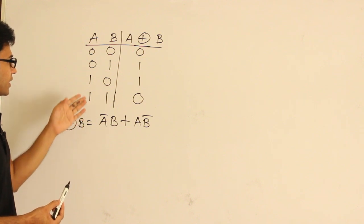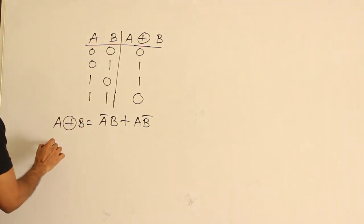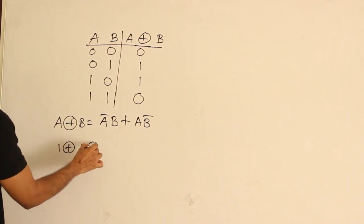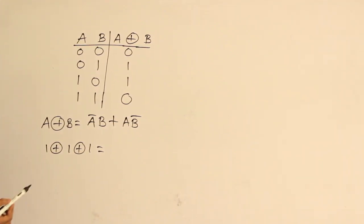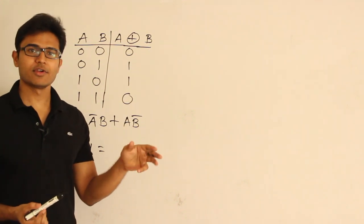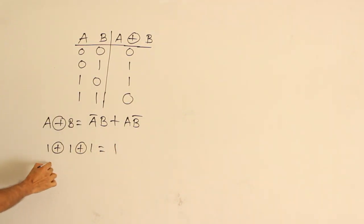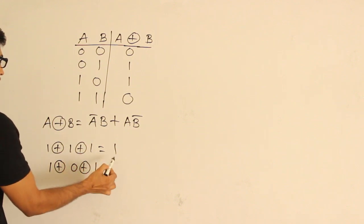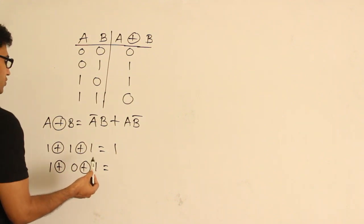It can even be extended. If it is really modulo-2 sum, you could write 1 XOR 1 XOR 1. Add these 3 and divide by 2: 1+1+1 is 3, divide by 2, remainder is 1. And for 1 XOR 0 XOR 1: 1 plus 0 plus 1 is 2, divided by 2, remainder is 0.